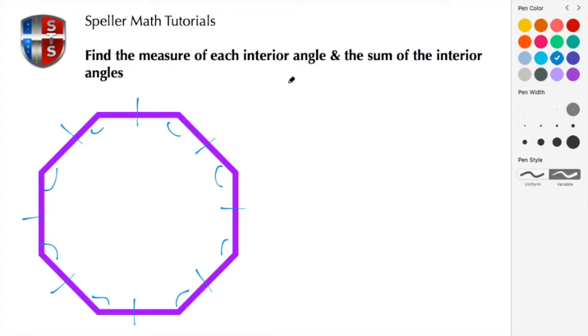What we're going to do here is there's an expression that we can use to figure out the sum of the interior angles and that expression is (n-2) times 180 where n is the number of sides in the polygon.